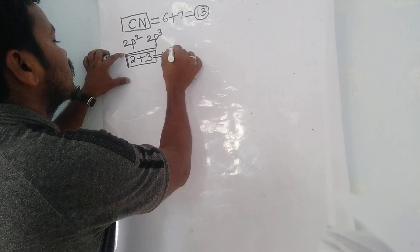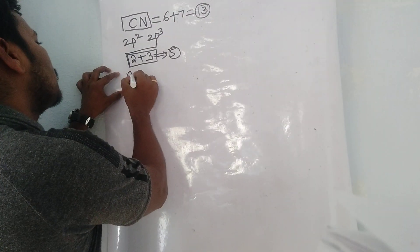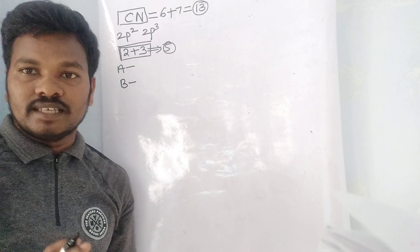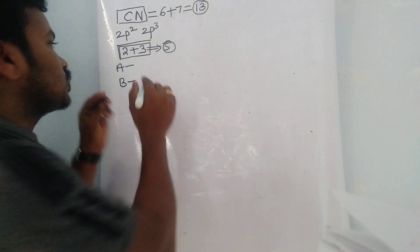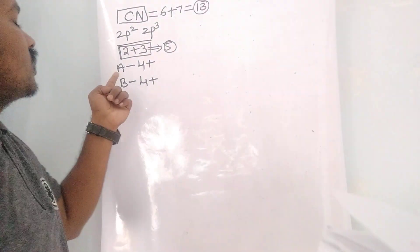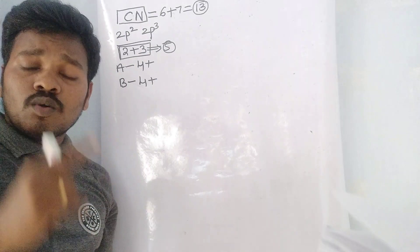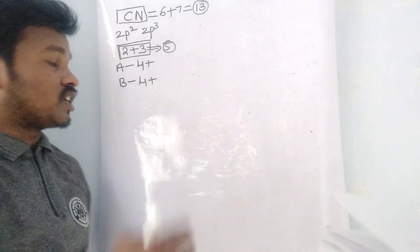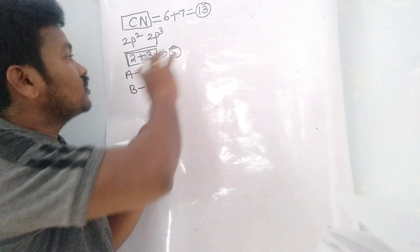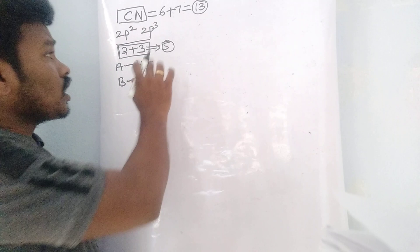Carbon has 2 valence electrons and nitrogen has 3 valence electrons, so the molecule has 5 valence electrons total. After writing that, just write 'A' for anti-bonding and 'B' for bonding. Now, 4 is always the fixed value. Without writing the full p-subshell configuration, anti-bonding starts at 4 and bonding starts at 4 — 4 is the fixed value for any molecule.